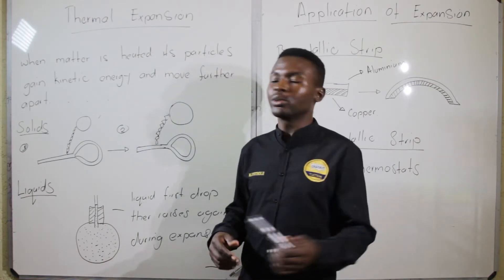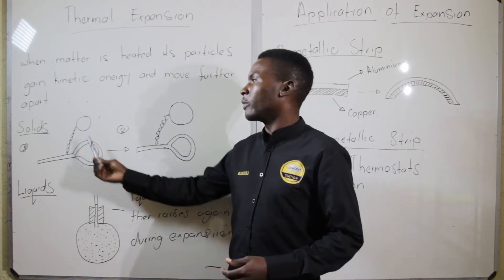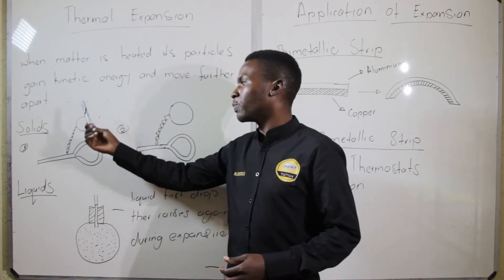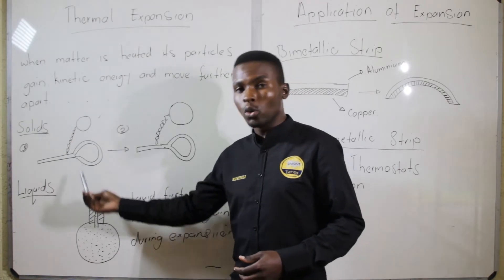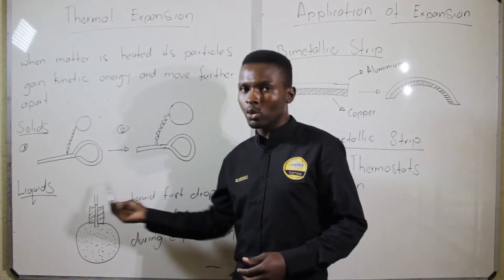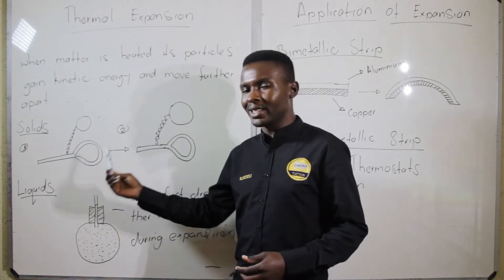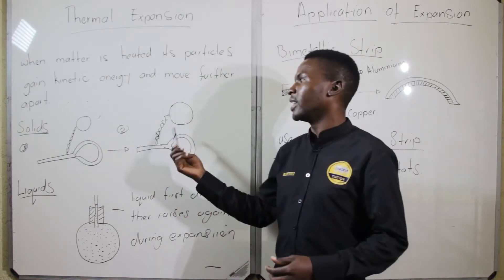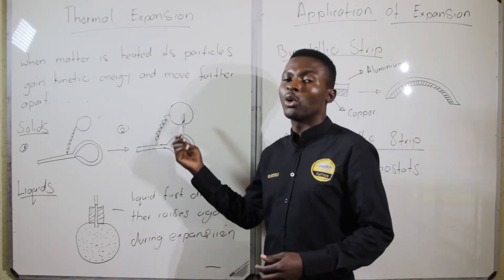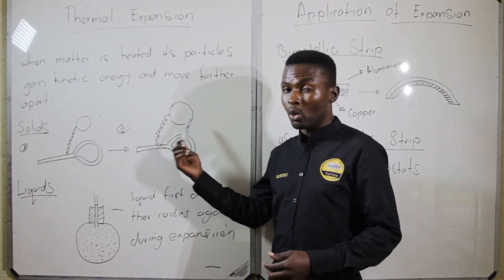I'll give an example in solids. We have a metal ball which passes through the loop or the hole before it gains kinetic energy, and after it has gained kinetic energy the ball is not able to pass through the hole.